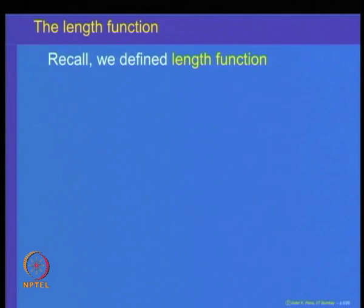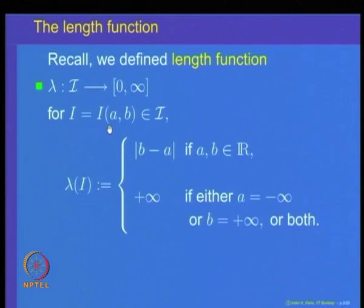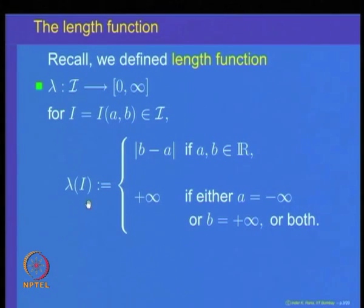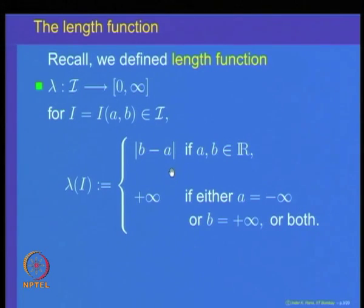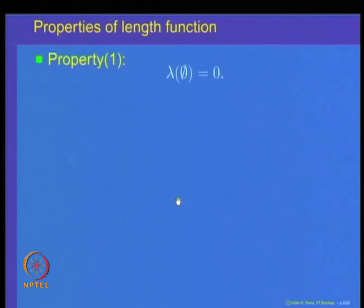Let us recall the properties of the length function that we have already proved. The length function was defined on the class of all intervals. For an interval with endpoints A and B, its length lambda of I is defined as the absolute value of B minus A if A and B are real numbers, and infinite if either endpoint is plus or minus infinity. For all finite intervals, the length is the usual difference between the values of the endpoints.